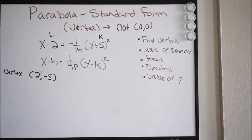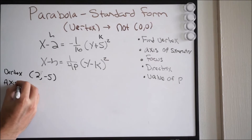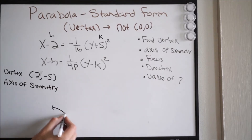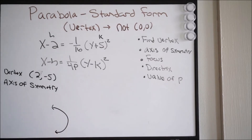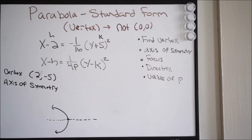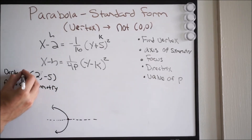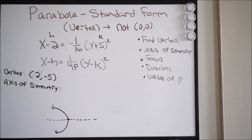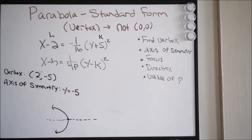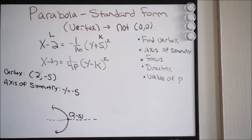Our next step is to find the axis of symmetry. The axis of symmetry goes right through the vertex and will be a horizontal line — essentially we fold that up and it will be congruent. So what will our axis of symmetry be? It's going to be y = −5, because our vertex is at (2, −5) and a horizontal line going through that is y = −5.